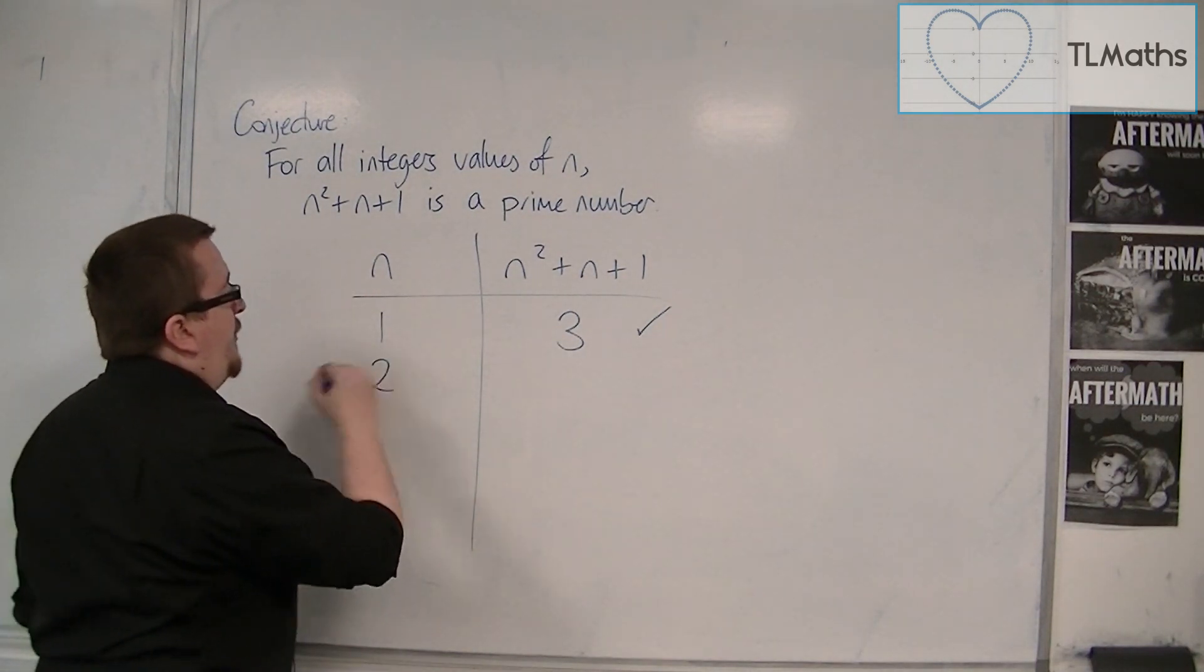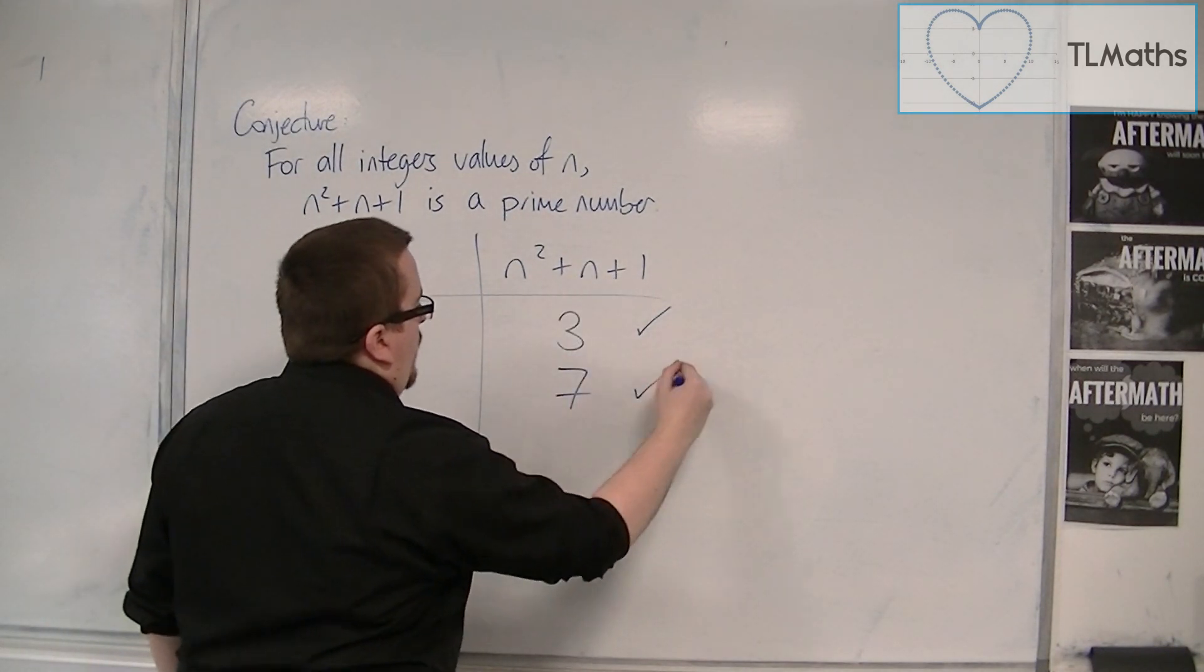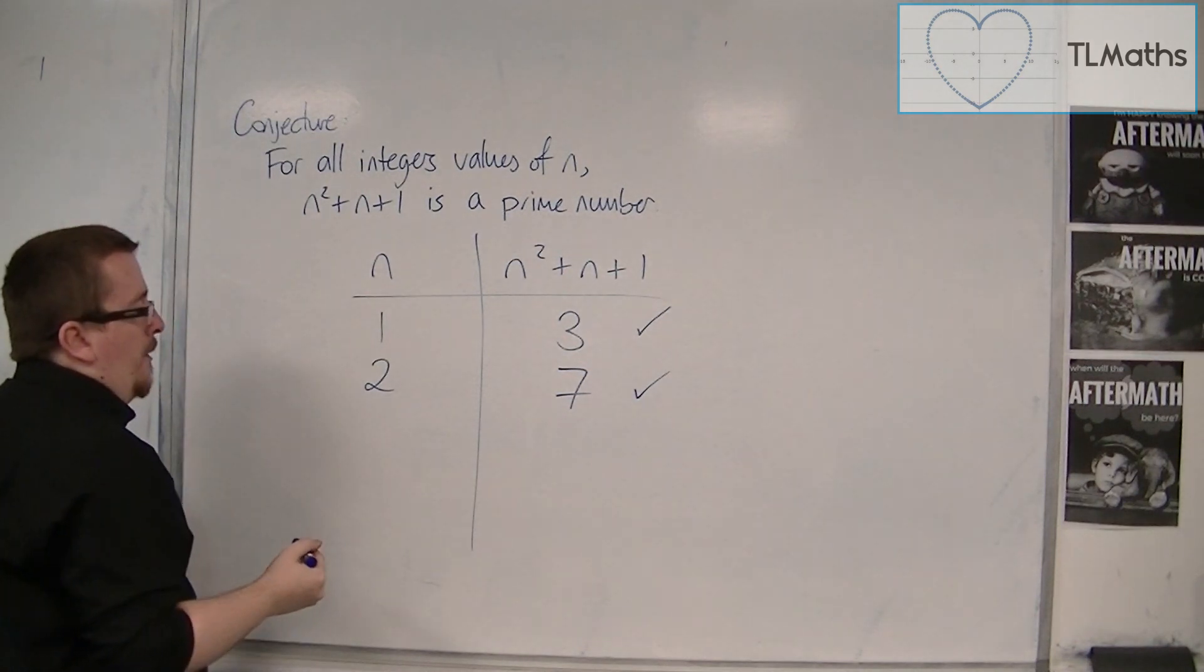When n is 2, we've got 2 squared plus 2 plus 1, so 7. So it works for n is 2 as well.